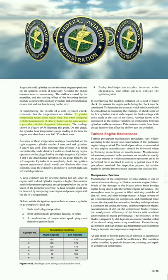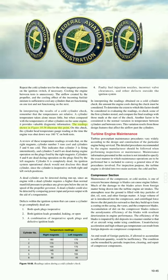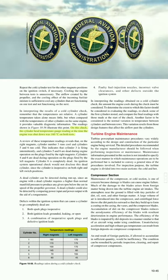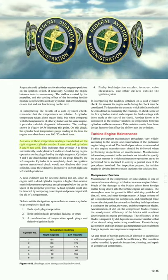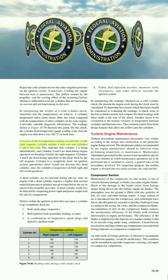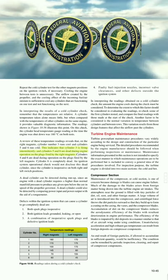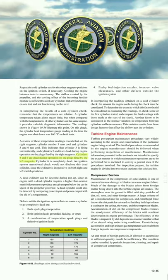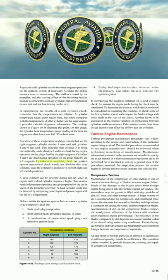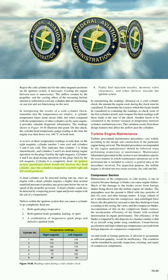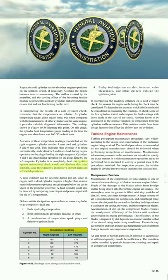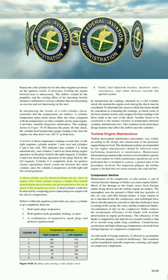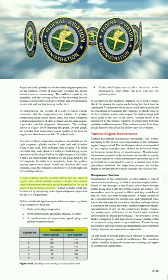When interpreting cold cylinder check results, remember that temperatures are relative — a single cylinder temperature means little, but compared with other cylinders on the same engine it provides valuable diagnostic information. For example, on a check where the cylinder head temperature gauge read 160°C at shutdown, review of temperature readings may reveal that cylinder three runs cool and cylinders five and six run cold on the right magneto, indicating cylinder three fires intermittently and cylinders five and six are dead. A dead cylinder can also be detected during run-up, since an engine with a dead cylinder requires higher than normal manifold pressure to produce any given RPM.